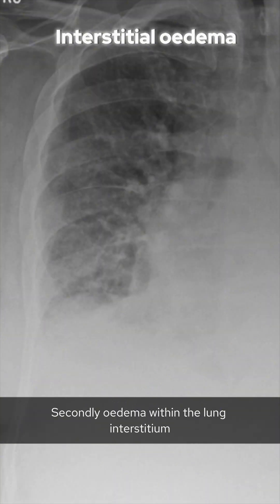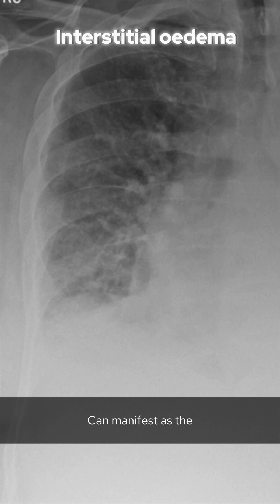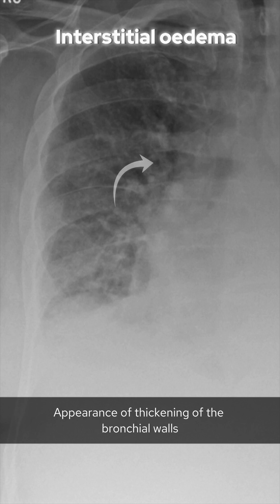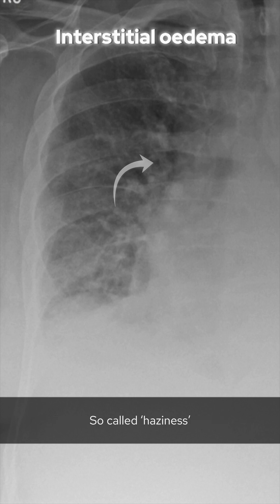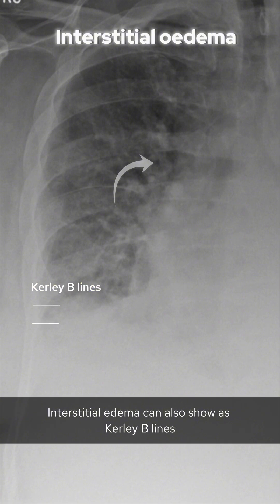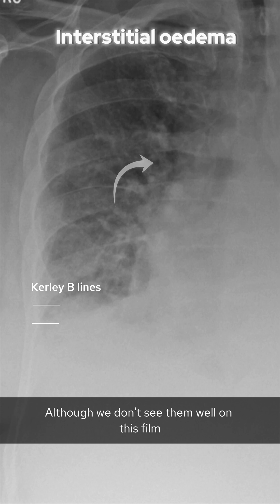Secondly, edema within the lung interstitium can manifest as thickening of the bronchial walls — so-called peribronchial cuffing — and these airways can lose definition, so-called haziness. Interstitial edema can also show as curly B-lines, which appear as thin horizontal lines at the lung bases at the periphery, although we don't see them well on this film. On CT, we would see this as interlobular septal thickening.